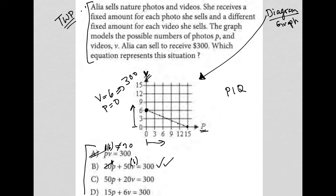How about for choice C, P is 0, so this whole thing becomes 0. 20 times 6 is only 120. So 120 does not equal 300. So C is gone.